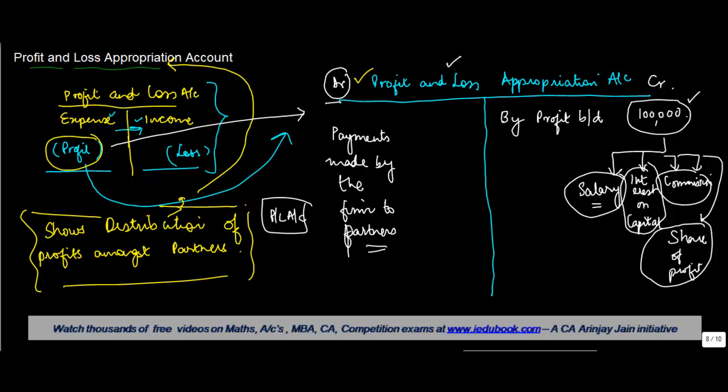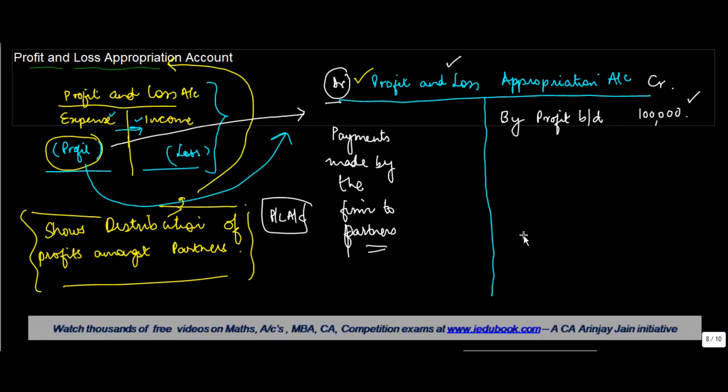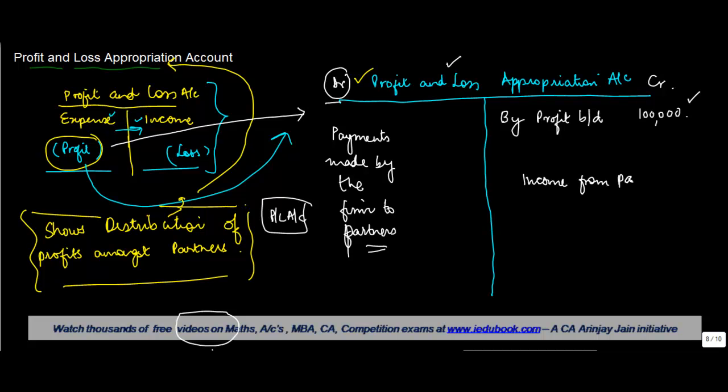The firm may also get some kind of income from partners, like interest on drawings. If the partner has made drawings, he's supposed to pay interest to the firm. When the firm gets this interest, it's kind of an income, so it's reflected as a credit in the profit and loss appropriation account.